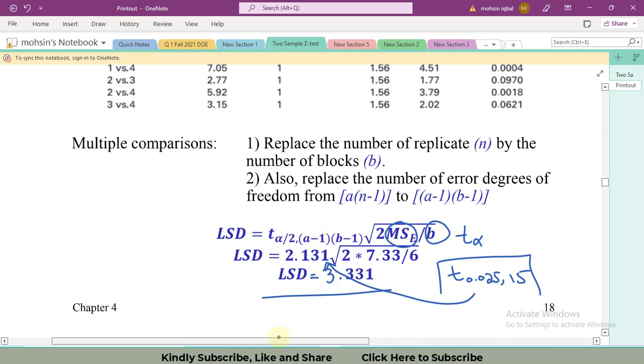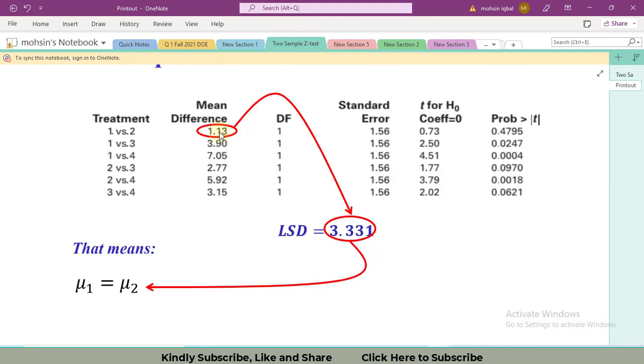Now I will compare all of the differences with this value. If our mean difference is less than the LSD value, there is no difference among the two treatment levels. So we can say that mu1 is equal to mu2, or treatment level 1 mean is equal to treatment level 2 mean.